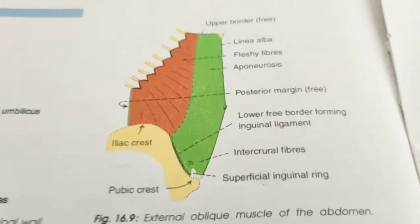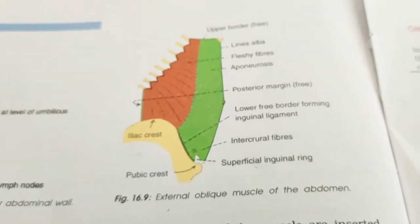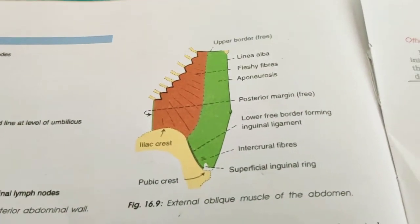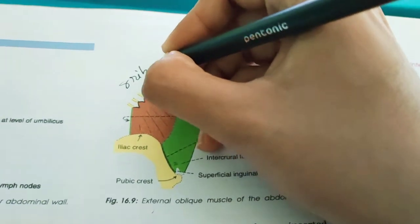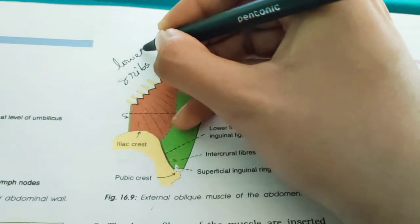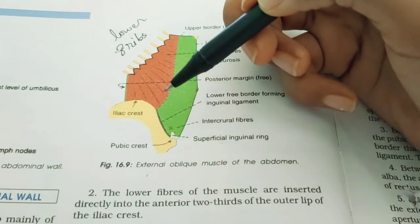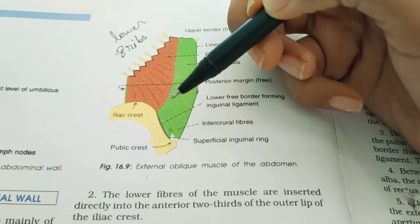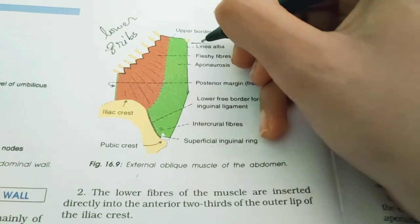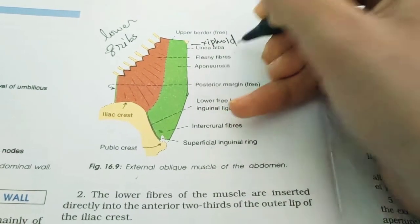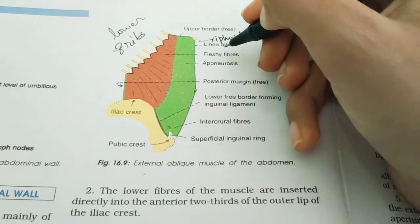The muscle arises from eight fleshy slips from the middle of the shaft of the lower eight ribs — that is its origin. For insertion, most of the muscle fibers form an aponeurosis and get inserted into the xiphoid process above, and also into the linea alba — you can clearly see the linea alba here.